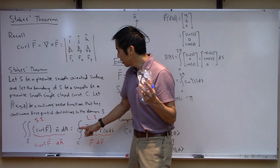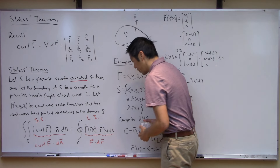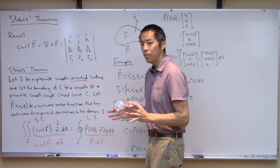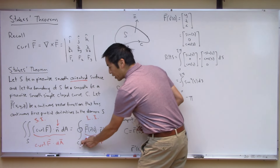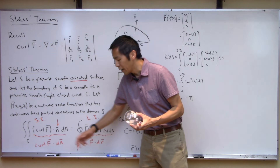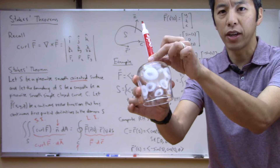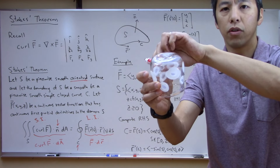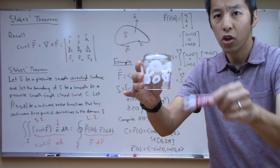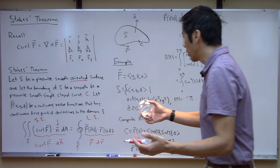Now we need to talk about the oriented surface because we have to make sure the orientation of the left-hand side and the right-hand side are consistent. The normal vector N has to be lined up with the definition of the orientation of C — these two need to be consistent. There are two potential normal vectors for this surface: one pointing outward and one pointing inward, into the cup. So there are two possible choices.